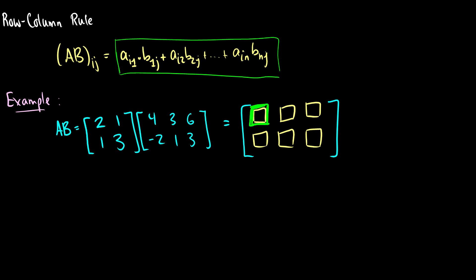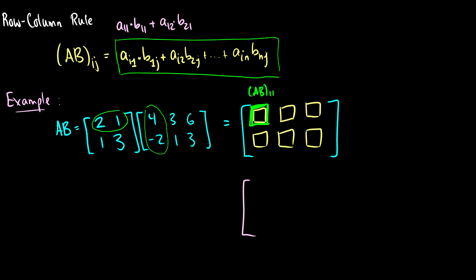Let's find the first entry, which is the AB₁₁ entry. This is called the row-column rule for a reason: we take the first row and multiply by the first column, and add the entries. So it's A₁₁ times B₁₁ plus A₁₂ times B₂₁, which is 2 times 4 plus 1 times negative 2 — that's 8 plus negative 2, which equals 6.